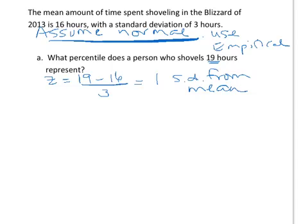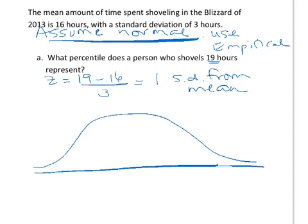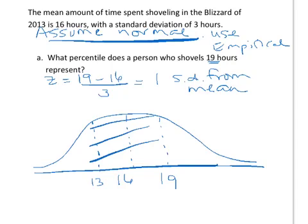The next thing I always tell people to do is draw the normal curve. Any time you're using it, draw it so you can picture what you're trying to find. So here's the mean of 16, and we're up here at 19. I'm going to draw the other side to make it symmetric — that would be 13. From the empirical rule, we know that the middle piece, from one standard deviation on either side, is 68% of our data, since it's normal.